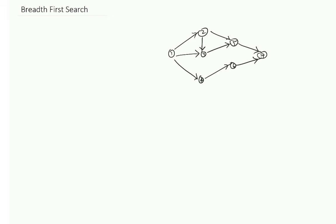How does breadth first search work? We are given some root node. Let us say that in this case our root node is node 1. We want to do a breadth first traversal of this graph. Let us first understand it without any algorithm. You start with the root node and then in the first step you visit all the neighbors of this node.